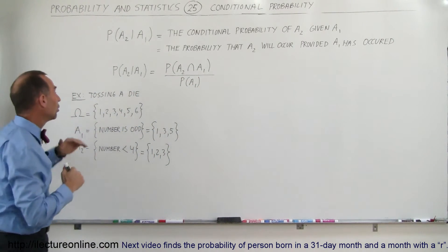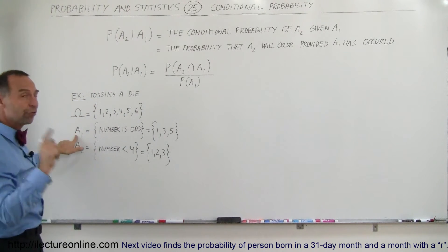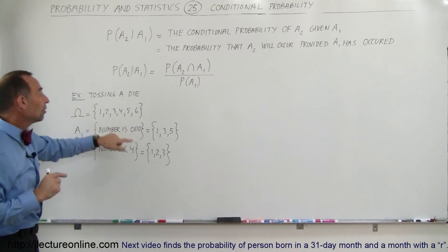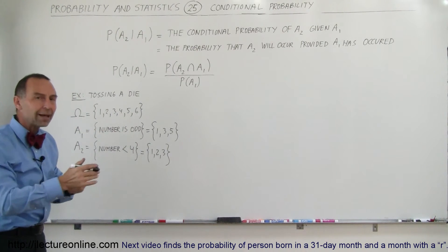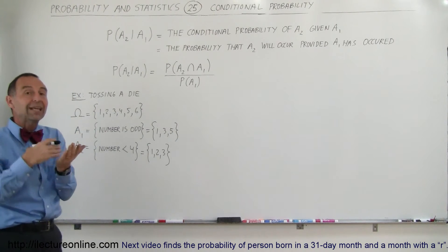When we look at the tossing of a die as an example, the sample space is 1 through 6. A1 is the first event and that the number is odd. So we've thrown the die and someone tells us the number is an odd number. That's the first event that has occurred.